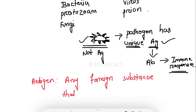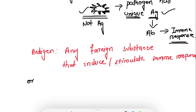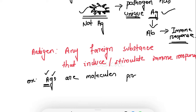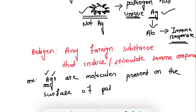So now, what is an antigen? An antigen is any foreign substance that induces or stimulates an immune response. Antigens are the molecules present on the surface of a pathogen. Antigen is represented as AG — 'A' is for antibody, 'G' is for generator. So antigen means antibody generator, written as AG.